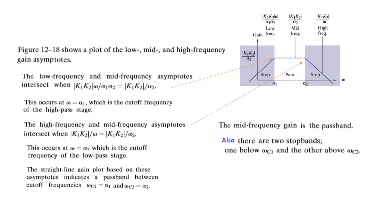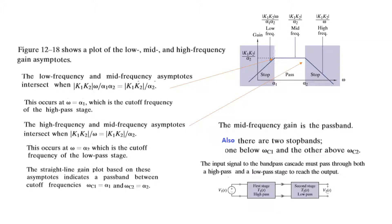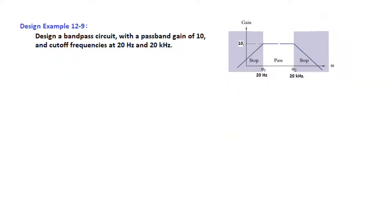There are two stop bands: one below ω_c1 and one above ω_c2. The input signal to the band-pass cascade must pass through both a high-pass filter and a low-pass filter — the combination of the two makes the band-pass filter. Now let's do one example, which is solved in the book but I'll clarify further.